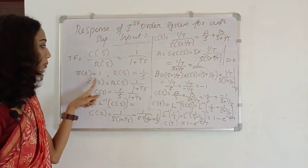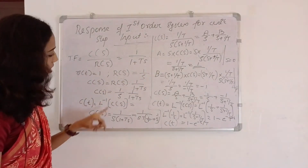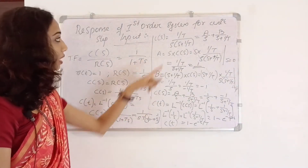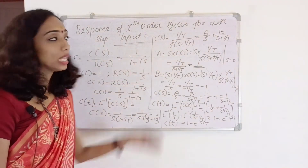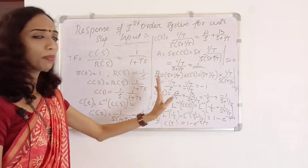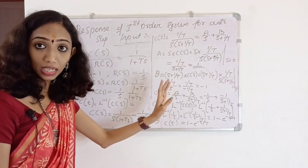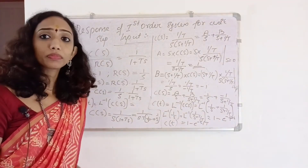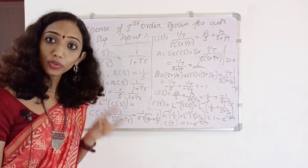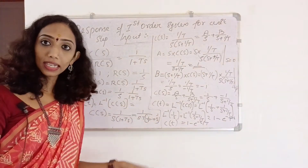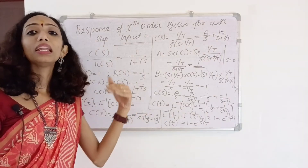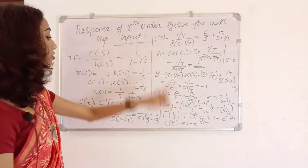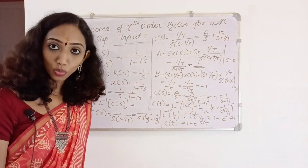R of T, that is R of S, equals 1 by S. Apply partial fraction to get A and B values. Then substitute back and apply inverse Laplace to move from frequency domain to time domain. The response of the first order system is C of T equals 1 minus e raised to minus T by T.